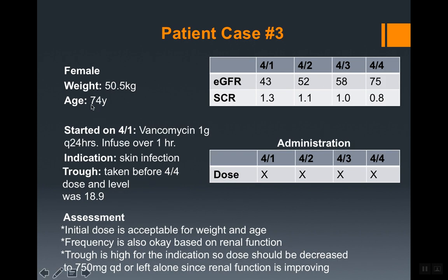Patient case three is a female, age 74, with listed weight, GFR, and serum creatinine levels that look acceptable trend-wise. Vancomycin was started at 1 gram every 24 hours infused over one hour for a skin infection. The trough before the April 4th dose came back at 18.9. The initial dose is acceptable given the patient's age, weight, and renal function. However, the trough is high for a skin infection, where we target 10 to 15, so the dose can be decreased to 750 mg once daily.